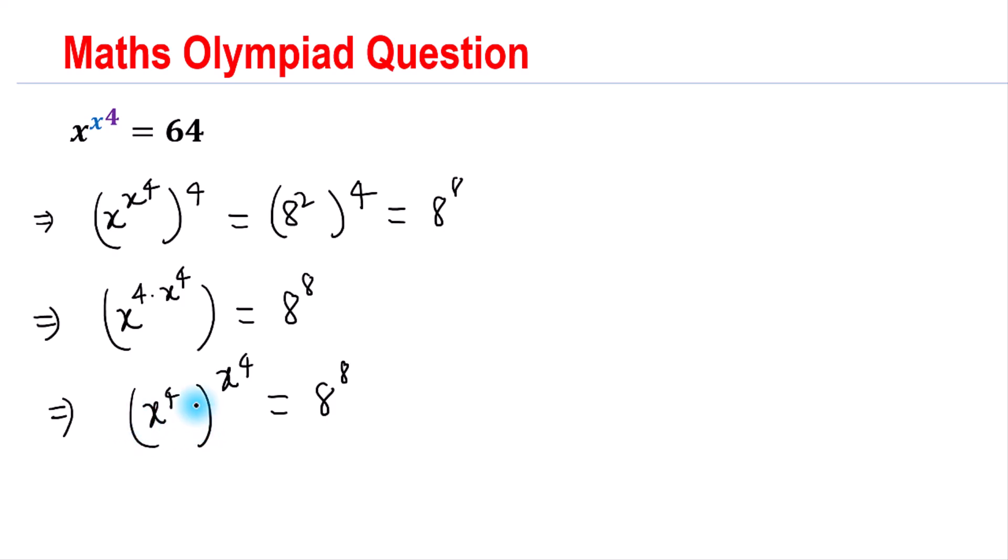Now we have transformed the given equation in the form of x to the x equals k to the k. So we can conclude that x to the 4 equals 8.